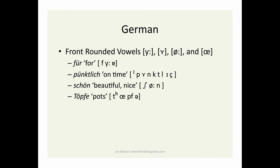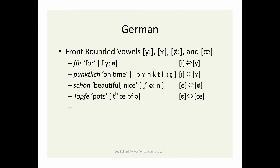Maybe people get confused because if letters with two dots are not available, you can spell them A-E, O-E, and U-E — but that's just spelling, not phonetics. Front rounded vowels correspond to the front vowels we know from English. It's going to be easy! I'll pronounce unrounded, then rounded — listen!